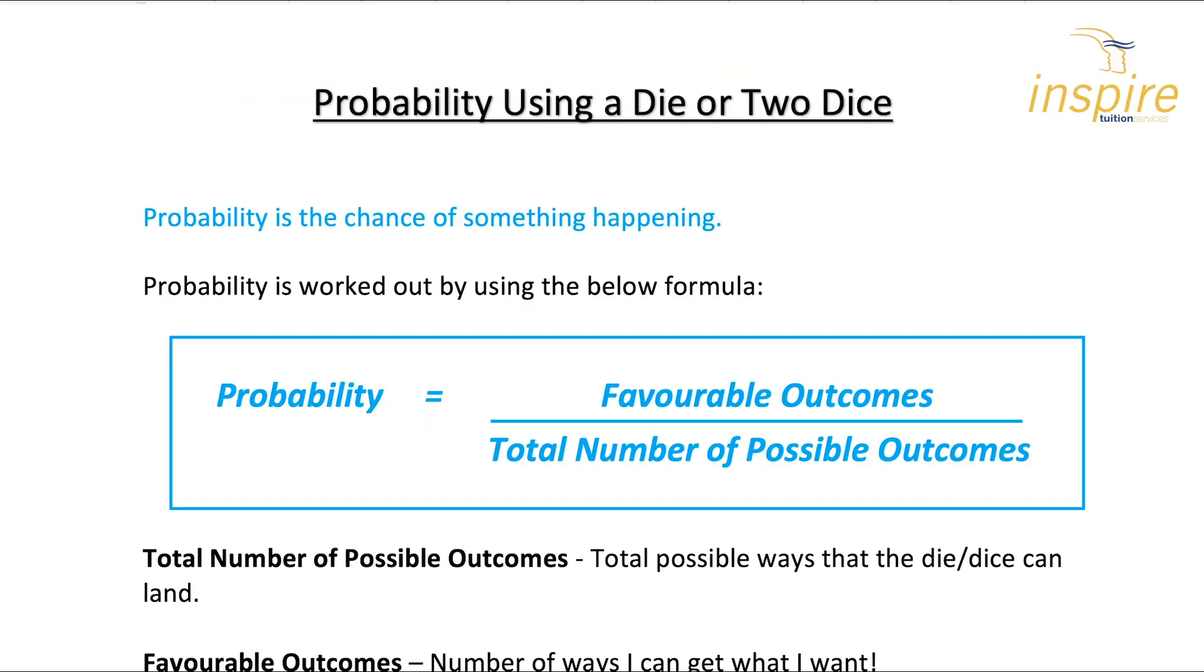Hi guys, today's lesson is looking at probability using a die or two dice. Probability is the chance of something happening, and probability is worked out by using this formula below. I wouldn't worry too much about the terminology just yet. As we move through this, it will become much more apparent and much easier to understand. At the moment it says probability equals favourable outcomes over total number of possible outcomes.